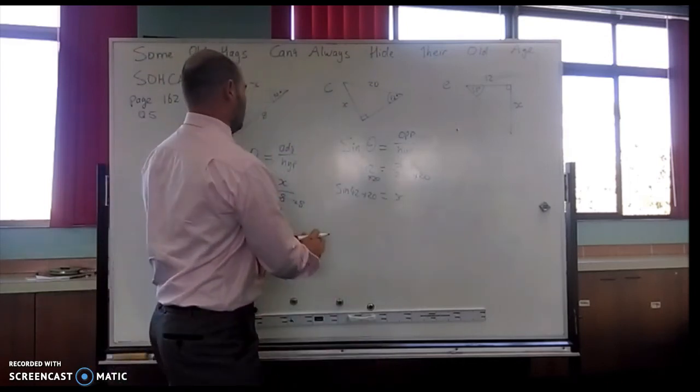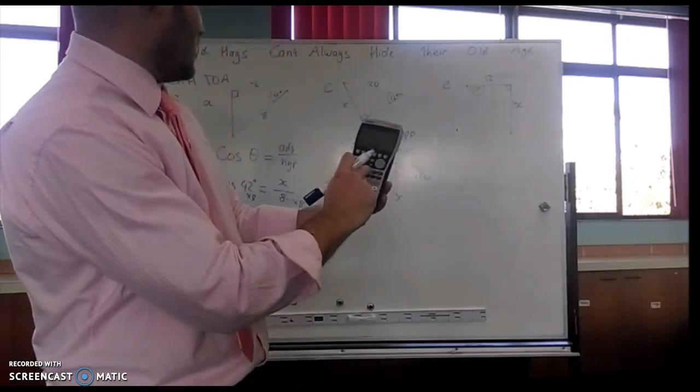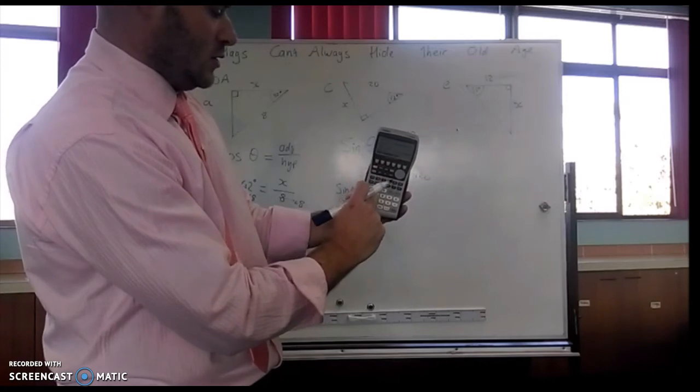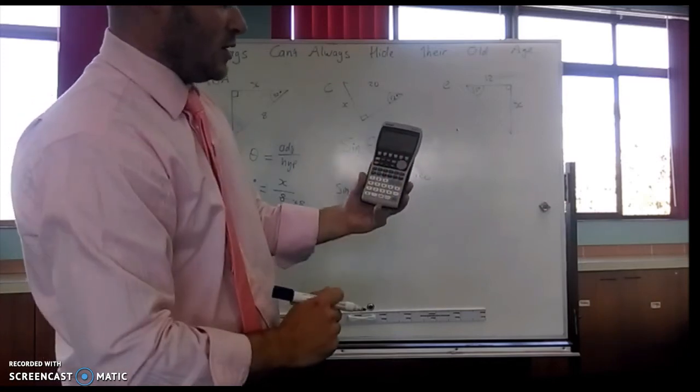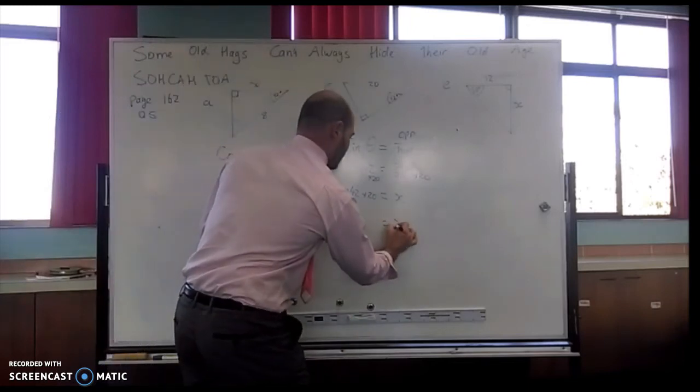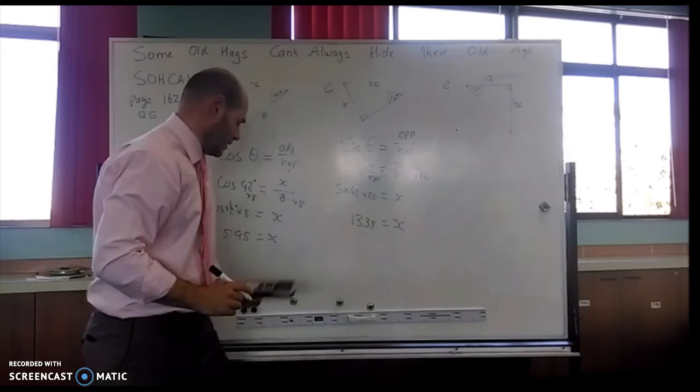Then I just go sin 42 times 20, and I've got 13.38. So here, x equals 13.38.